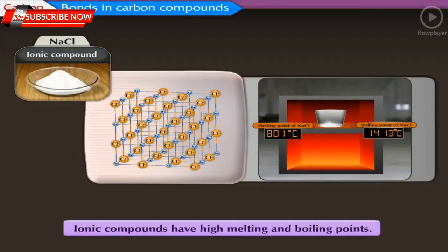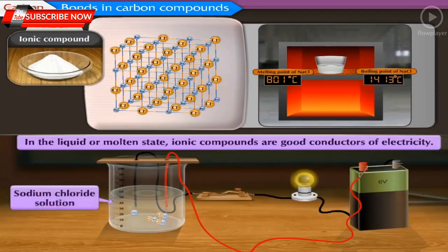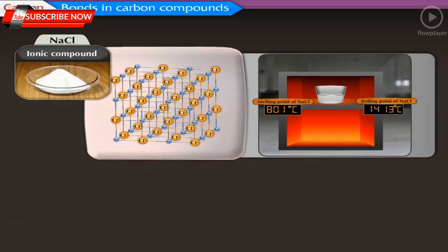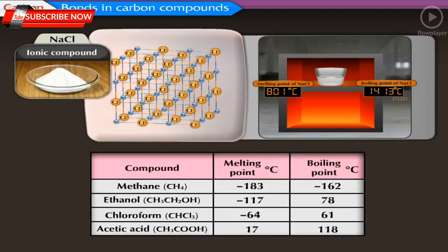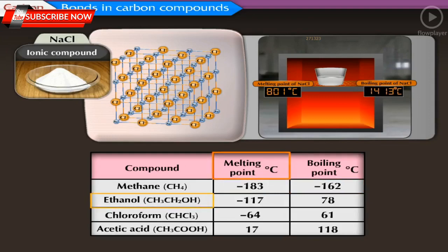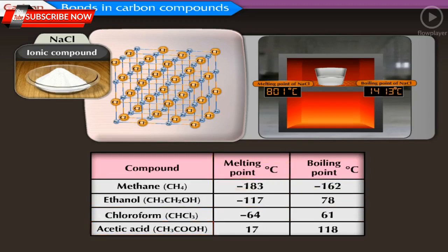Ionic compounds have high melting and boiling points, and in the liquid or molten state, ionic compounds are good conductors of electricity. These properties are explained by the ionic bonds present in them. Boiling points and melting points of some compounds are given here. The melting point of methane is −183°C and its boiling point is −162°C.